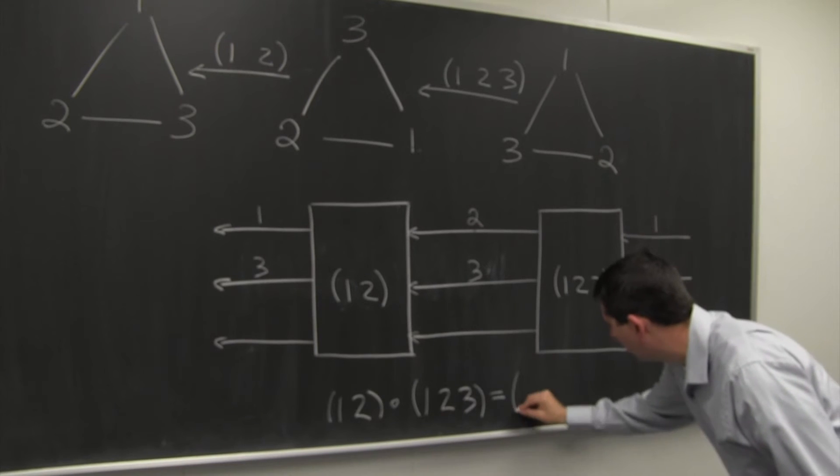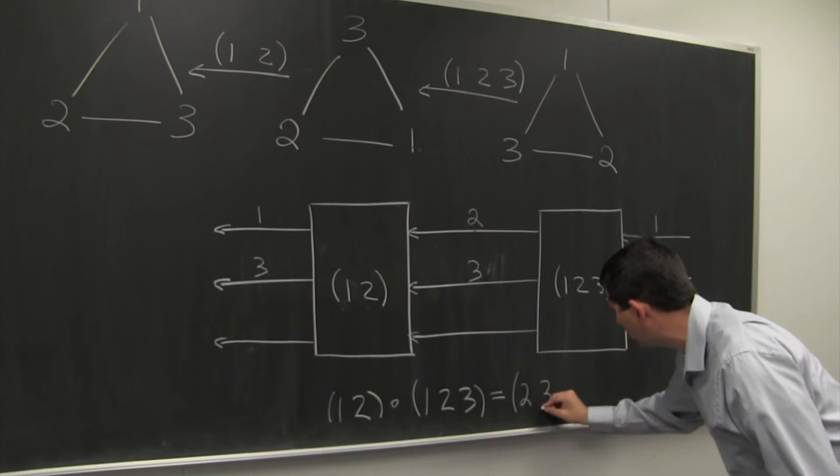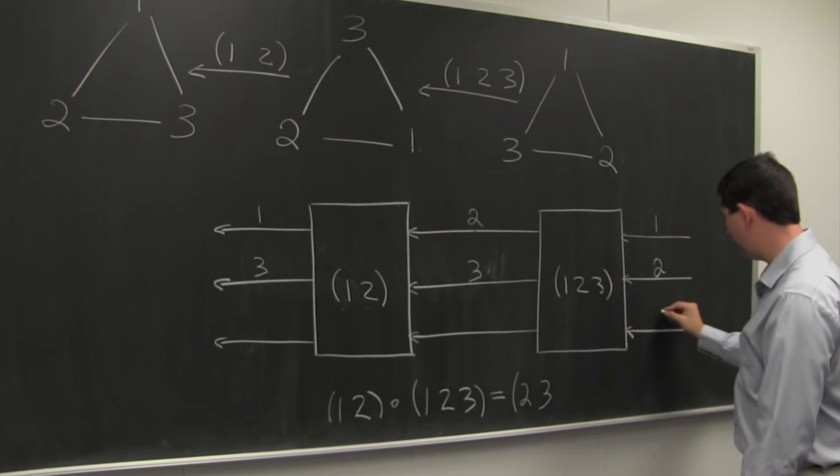2 is sent to 3. So we can start to write down our answer. We know that 2 is going to get sent to 3. Now let's check 3.